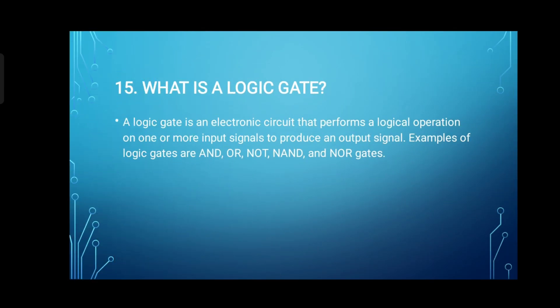15. What is a logic gate? A logic gate is an electronic circuit that performs a logical operation on one or more input signals to produce an output signal. Examples of logic gates are AND, OR, NOT, NAND, and NOR gates.